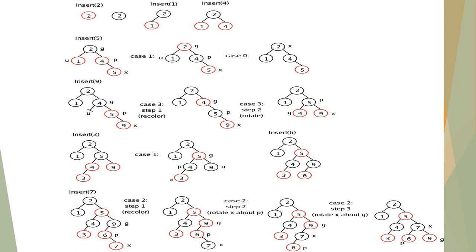After performing the double LR rotation, 2 is the root node and 1, 5, 4, 3, 7, 6, and 9 are the leaf nodes. Here no need to change the colors because it obeys the properties of red-black tree. So this is about the red-black tree. Thank you.